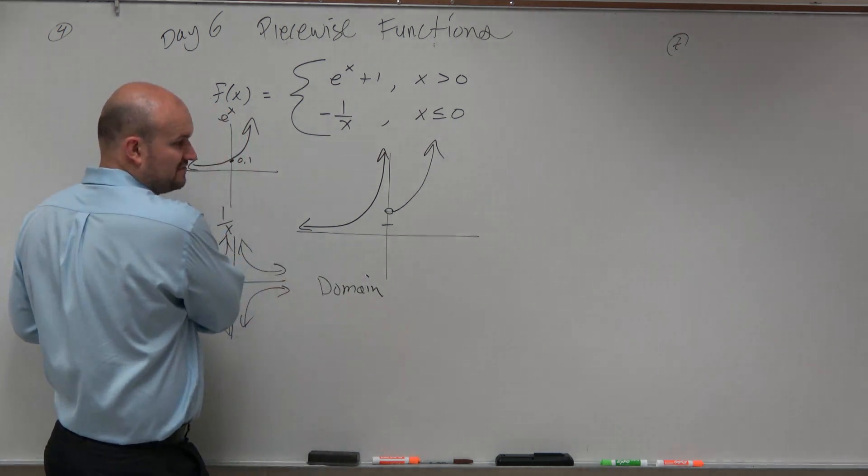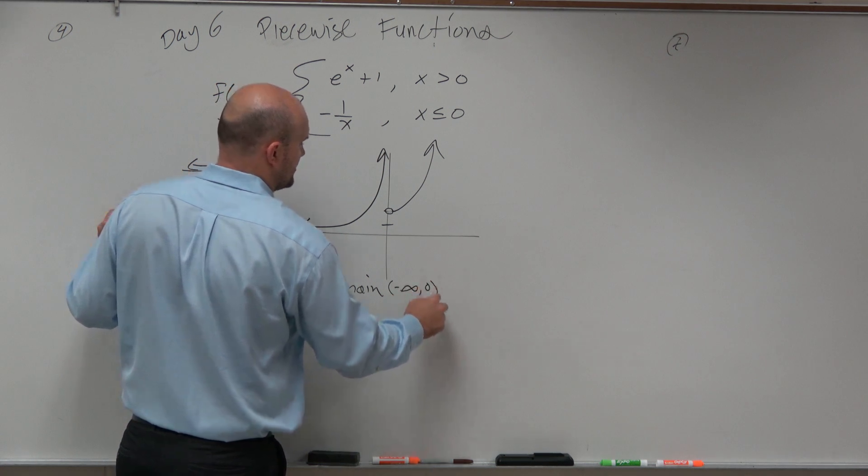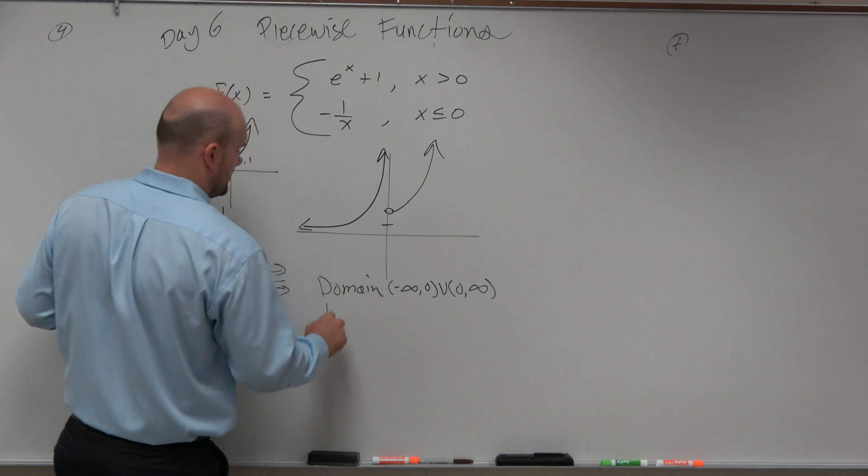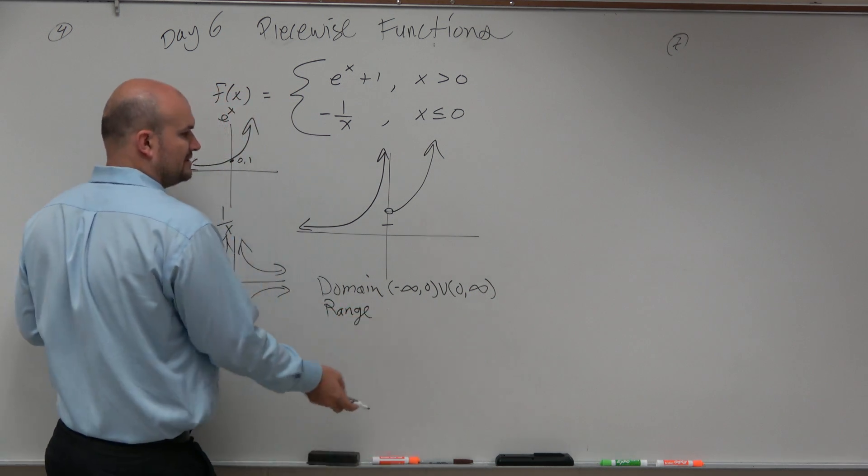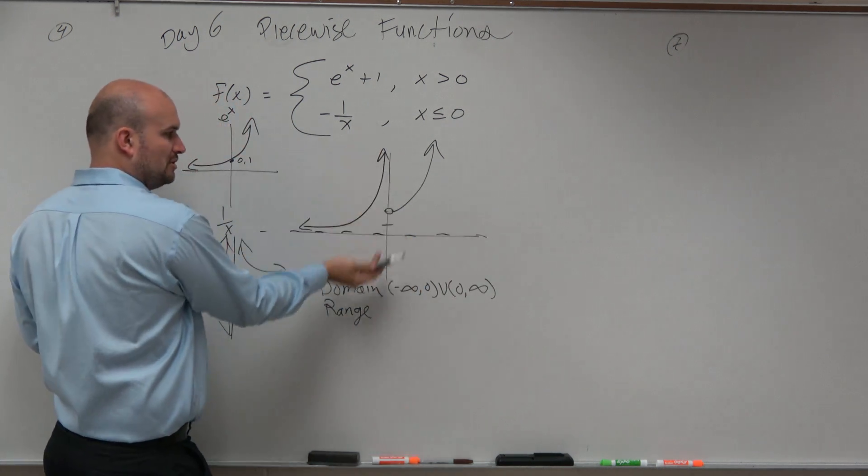If I was going to say, what is the domain of this function? Well, you'd say it looks like it's from negative infinity to 0 union 0 to infinity. If I asked you what the range was, you'd say, well, this graph goes to this asymptote here. So it doesn't go below 0, but it looks like it goes all the way to infinity.